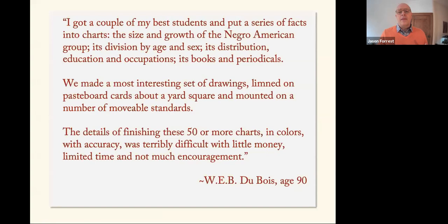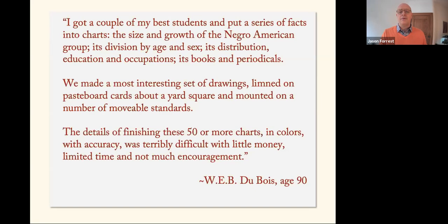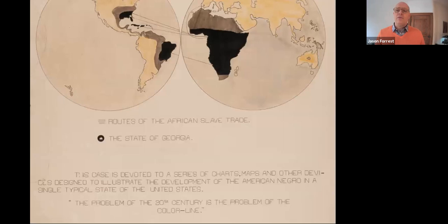Du Bois recalls in his autobiography written at age 90: 'I got a couple of my best students and put a series of facts into charts — the size and growth of the Negro American group, its division by age and sex, its distribution, education, and occupations, its books and periodicals. We made a most interesting set of drawings limned on pasteboard cards about a yard square and mounted on movable standards. The details of finishing these 50-plus charts in colors with accuracy was terribly difficult with little money, limited time, and not much encouragement.'